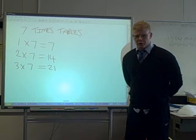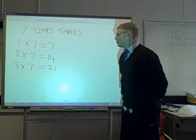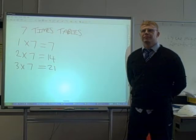Good, good. Johnny, two times seven is fourteen. Two times seven is fourteen. Very good. Three times seven is twenty-one. Three times seven is twenty-one. Four times seven is twenty-eight. Four times seven is twenty-eight.